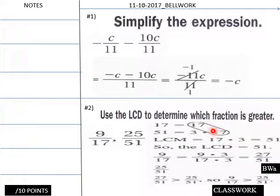So the LCD here is 51. So this would be 27 over 51 and this would be 25 over 51. So which fraction is greater? It would be 9 over 17 is greater than 25 over 51.